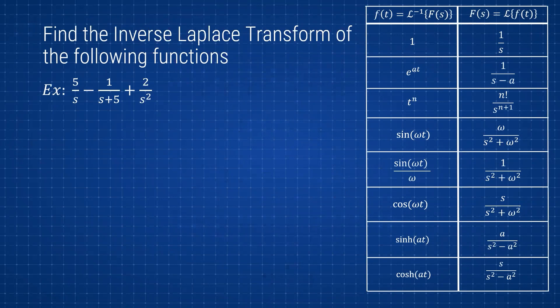The example we have here is: 5/s minus 1/(s+5) plus 2/s². If you already saw the first video regarding the Laplace transform, this should be pretty easy to follow. If not, go back and watch it — the link will be shown in the video — so you can see where everything is coming from and where this table is being used.